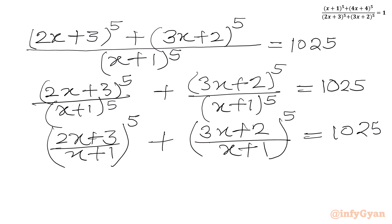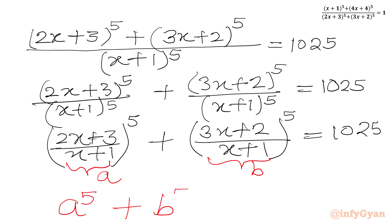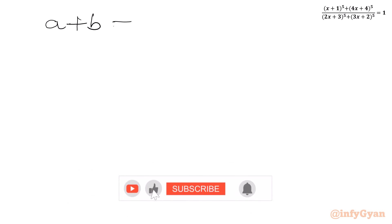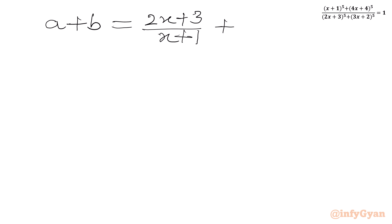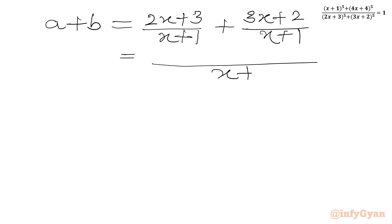Now we can use substitutions. Let's say the first bracket is a, and the second bracket we will call b. So the very first equation we can write is a^5 plus b^5 equal to 1025. Let's say this is equation 1. Now I will find the value of a plus b. So a plus b equals (2x+3)/(x+1) plus (3x+2)/(x+1). The denominator is common — it is x+1.